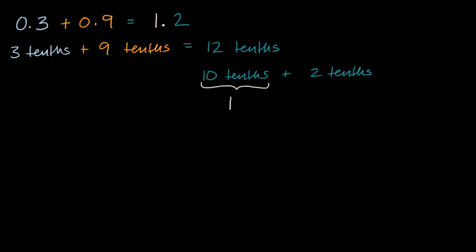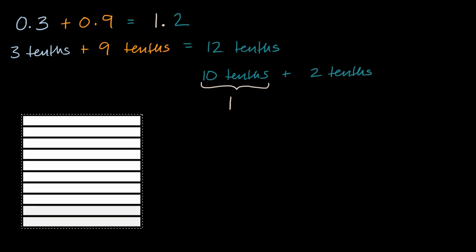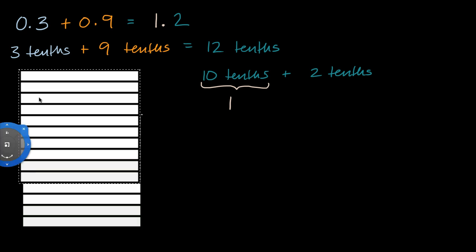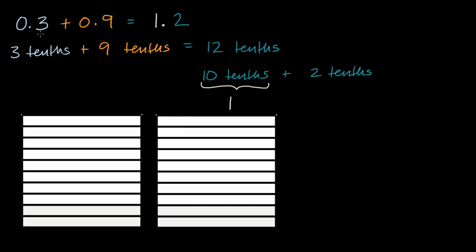Now if we want to see that visually, let's get our diagram out again. So actually I'm going to put two of these here. So one and then a second one. And we want to add, so let's start with the 3 tenths. So let me color these in really fast. So use that light blue color. So that is 1 tenth. This is 2 tenths. Just coloring them in really fast. And this is 3 tenths.